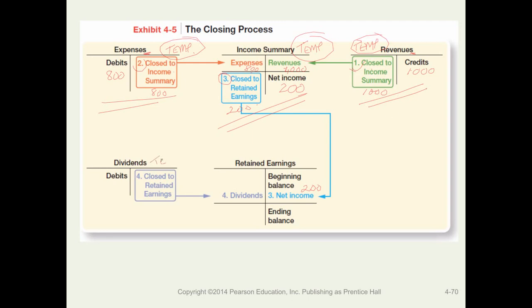Dividends are a separate temporary account, closed directly to retained earnings. If dividends are $50, we debit retained earnings $50 and credit dividends — dividends are now zero. If the beginning retained earnings balance was zero, then: zero plus net income of $200 minus dividends of $50 gives an ending retained earnings balance of $150. To summarize: revenues and expenses close to income summary; income summary closes to retained earnings; dividends close directly to retained earnings.